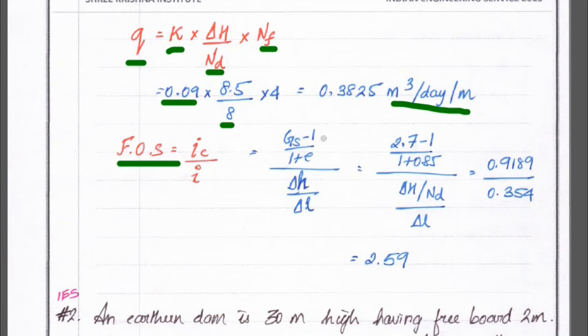So, ic is equal to g minus 1 divided by 1 plus e. So, g is equal to the given specific gravity of solid is equal to 2.7 and minus 1. So, divided by 1 plus e. So, e also given 0.85.